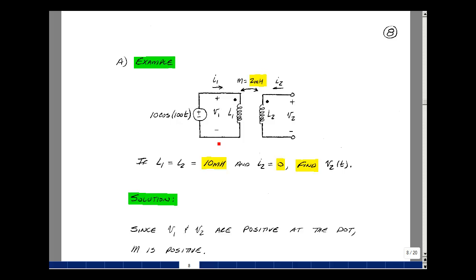And so the voltage V1 is equal to L1 Di1/dt plus M times Di2/dt, and the voltage V2 is equal to M Di1/dt plus L2 Di2/dt. This is shown below.